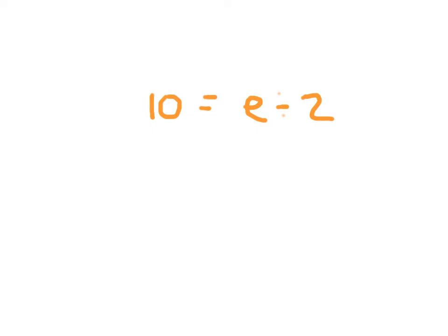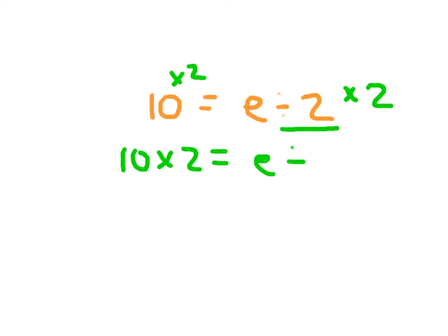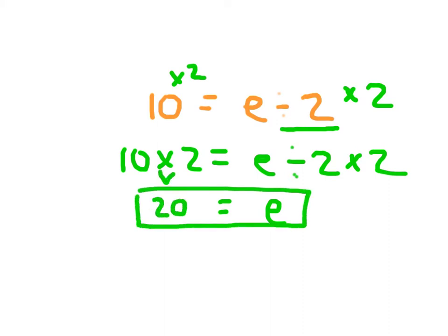Here I have 10 equaling e divided by 2. Since it says divided by 2, I'm going to multiply by 2. If I do that on one side of the equation, I must do it on the other side as well. Rewriting this: 10 times 2 equaling e divided by 2 times 2. The right-hand side evaluates to e, and 10 times 2 is 20, so e equals 20. Do not get confused that the variable was on the right side of the equation this time.